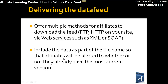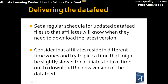You need to offer multiple methods for affiliates to download the feed — via FTP or HTTP on your site, or via web services like XML or SOAP. Include the date as part of the file name so affiliates will know whether they have the most current version and aren't downloading something unnecessarily. Set a regular schedule for updating the data feed so affiliates know when to get the latest version — if you do it every Friday, keep to that schedule.